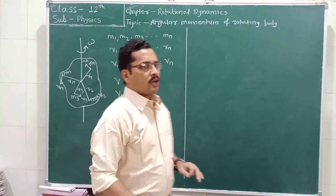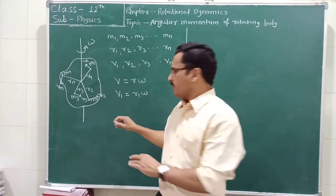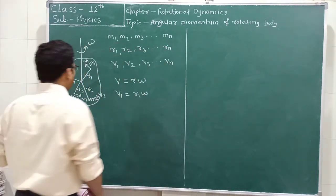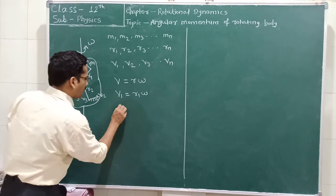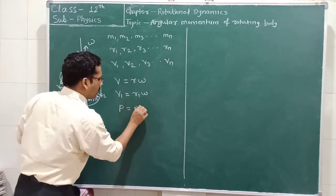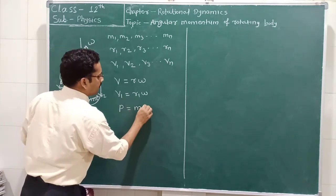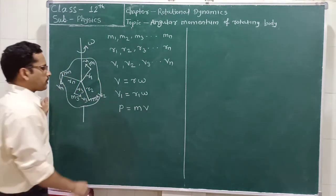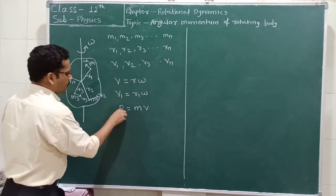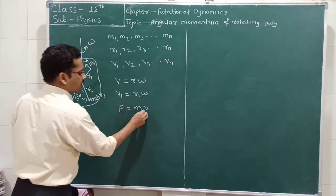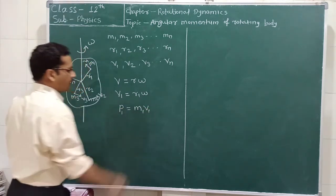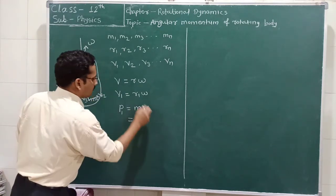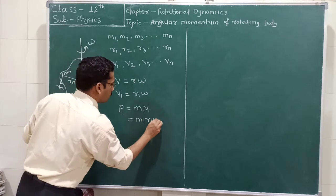Now we apply the formula for linear momentum. Linear momentum, denoted by P, is the mass of the particle multiplied by its velocity. Therefore, for the first particle, the linear momentum P1 is equal to M1 multiplied by V1. We can substitute V1 as R1 into omega, giving P1 equal to M1 R1 omega.